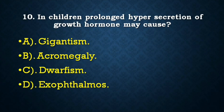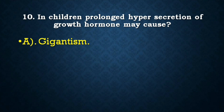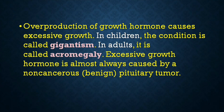Next question: In children, prolonged hypersecretion of growth hormone may cause — gigantism, acromegaly, dwarfism, or exophthalmos? Correct answer is gigantism. Overproduction of growth hormone causes excessive growth. In children the condition is called gigantism; in adults it is called acromegaly.